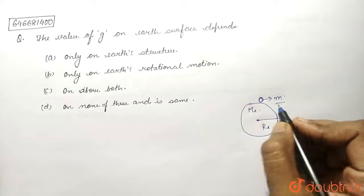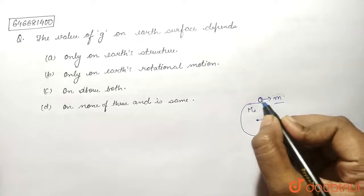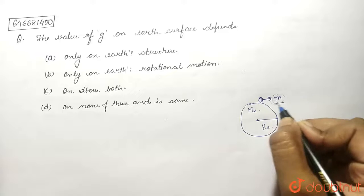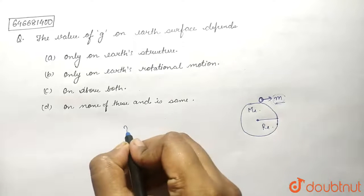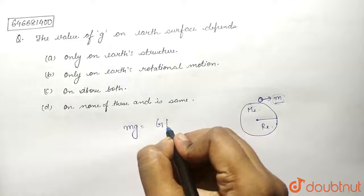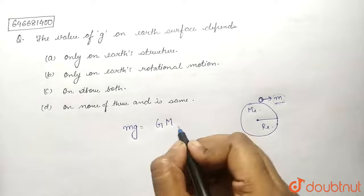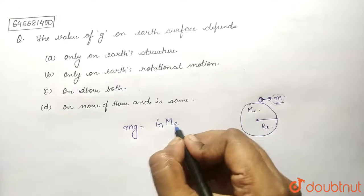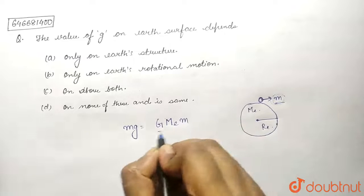So the weight of this small body, the weight of this point mass which has mass m, is given by mg equals G (the gravitational constant) times M_e (the mass of Earth) times the mass of the body upon r (the radius of Earth) squared.